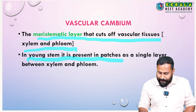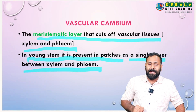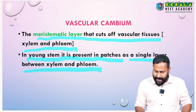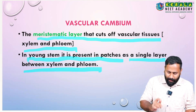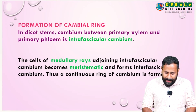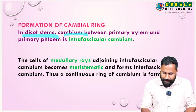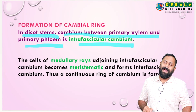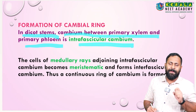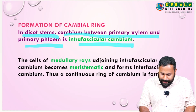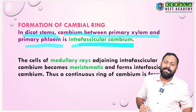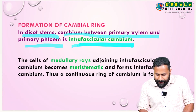In a young stem, vascular cambium is present in patches as a single layer between xylem and phloem — this is called intrafascicular cambium. In a dicot stem, cambium present between primary xylem and primary phloem inside the vascular bundle is called intrafascicular cambium.